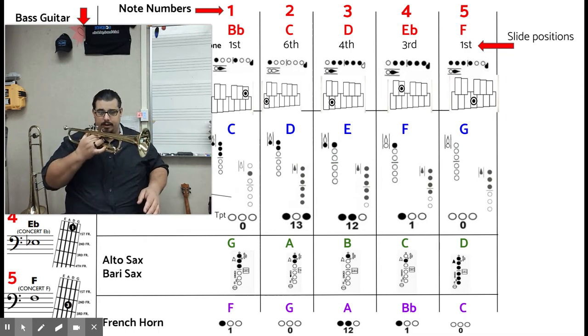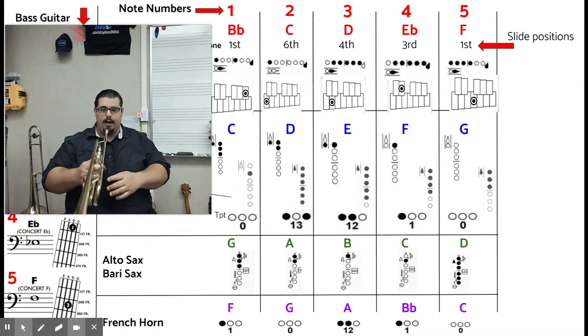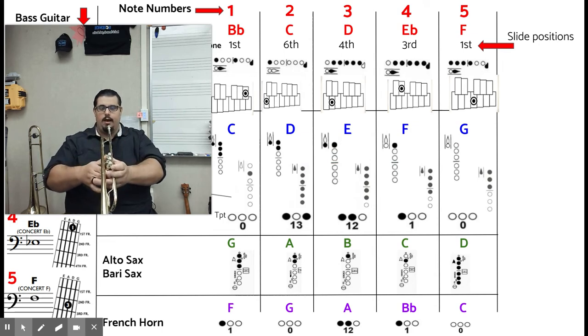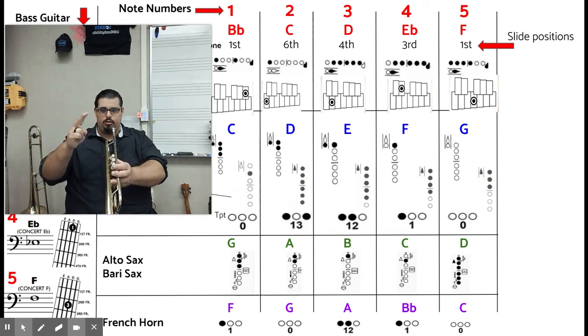The trumpet has three buttons, and they're numbered the closest to you, one, next one farthest away, two, three. And your fingers are numbered one, two, and three.